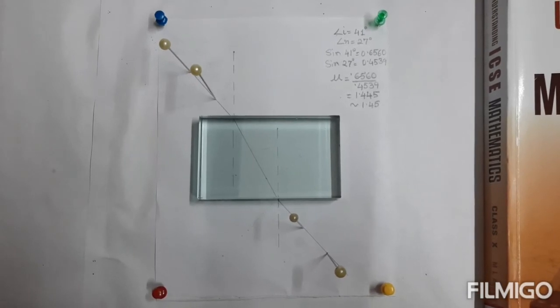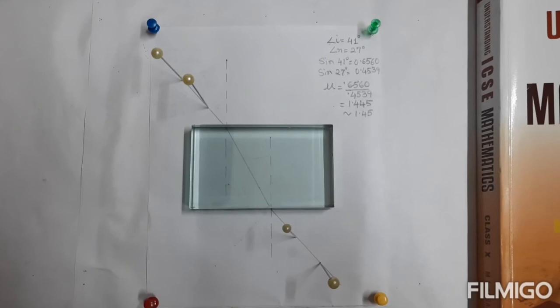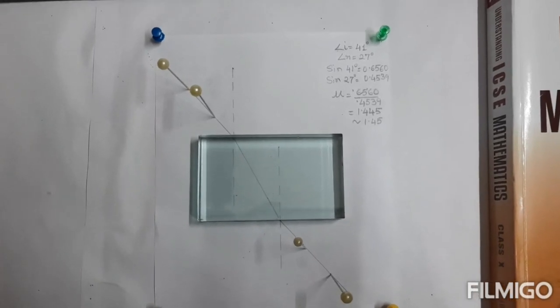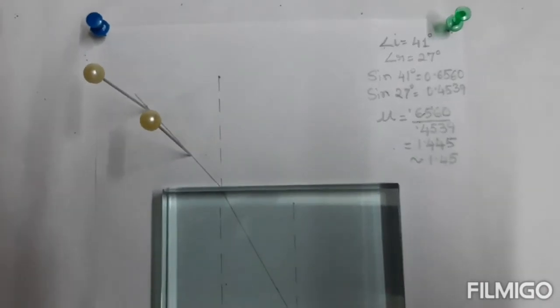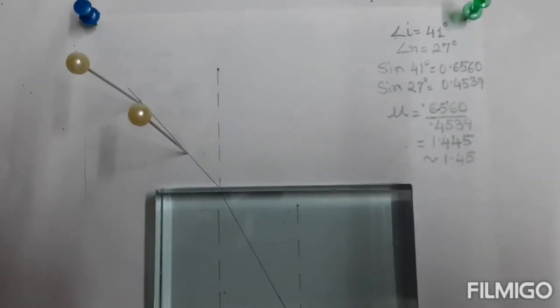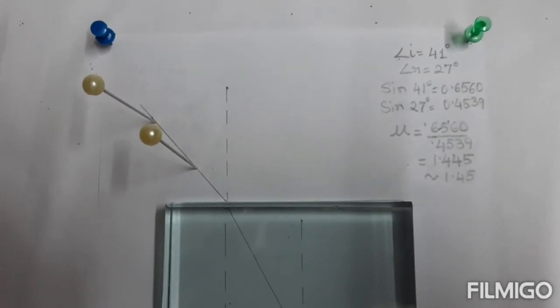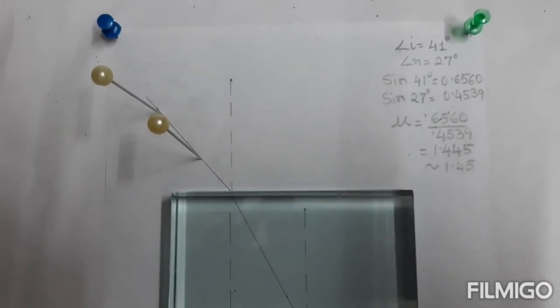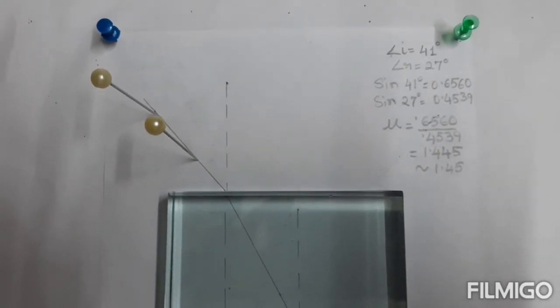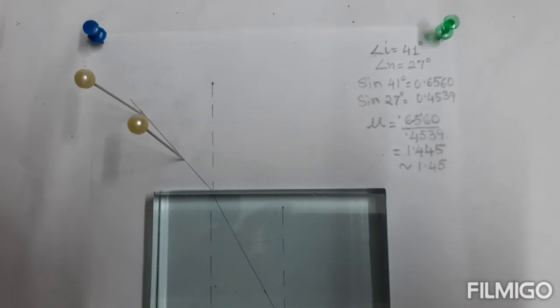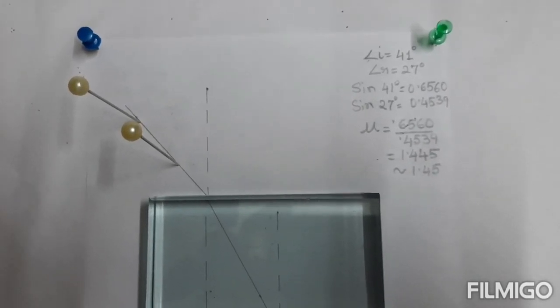We repeat the experiment for the third time with one incident ray and then we calculate and we get the data: incident ray equals to 41 degrees and refracted ray 27 degrees, and at last we calculate the mu, that is the refractive index, we get 1.445 which is nearly equal to 1.45.